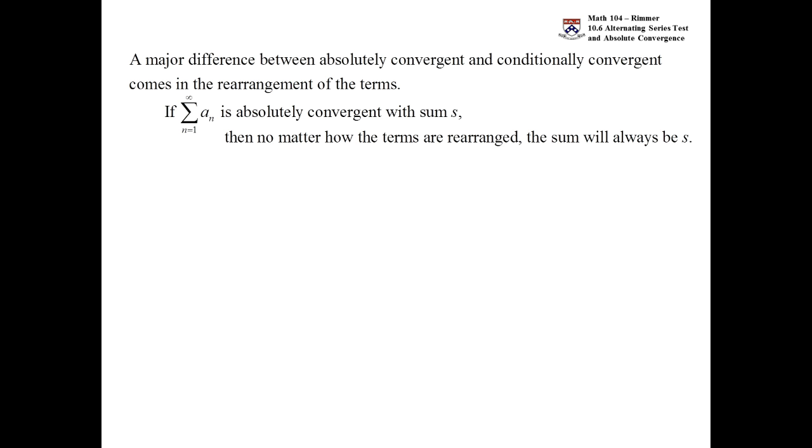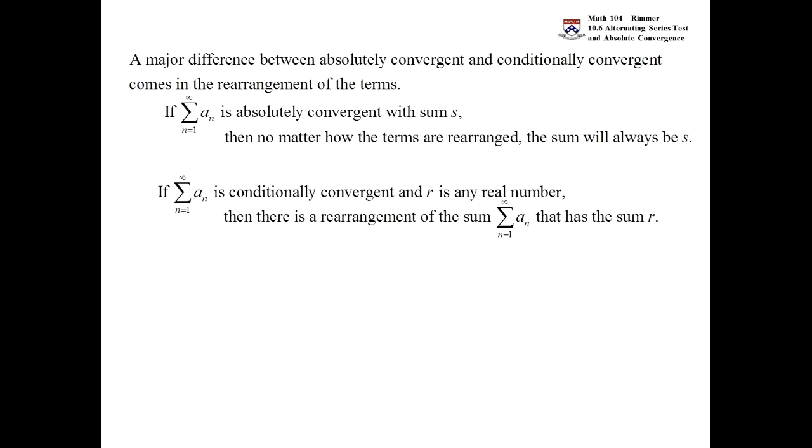This is a very strong type of convergence. When we look at the weaker type of convergence called conditional convergence, basically the sum can be anything you want it to be. So take a real number R, I can somehow rearrange the terms and make it add up to R. Very strange but true.